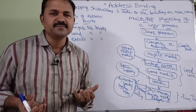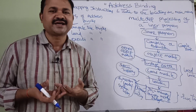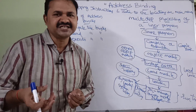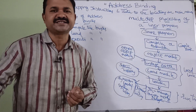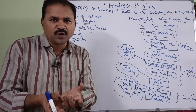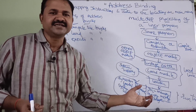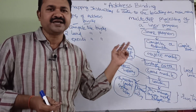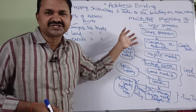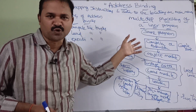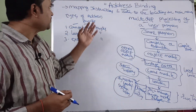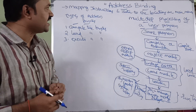A program is a collection of instructions where each instruction contains some data. That program resides in the hard disk. So address binding means mapping those instructions of the program to the main memory. This is called address binding.